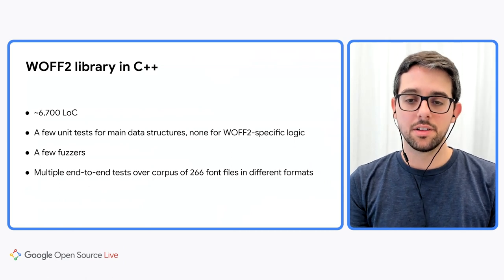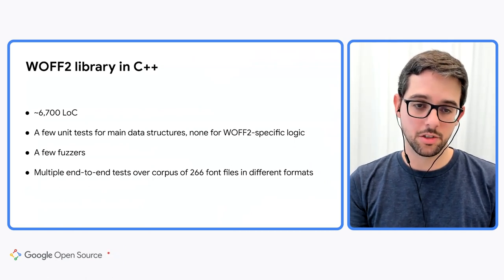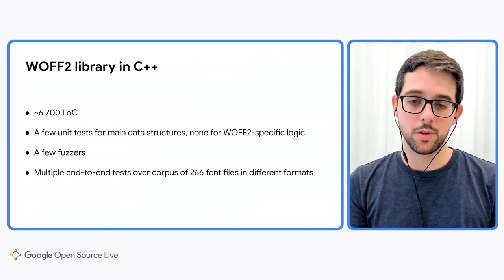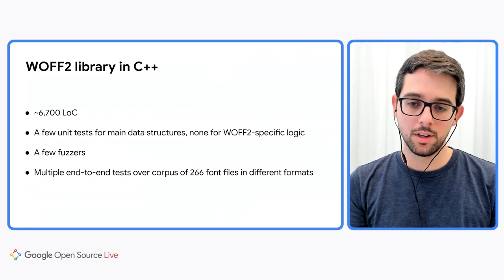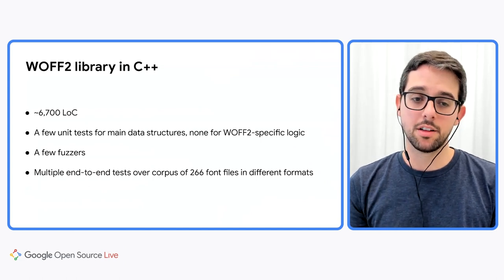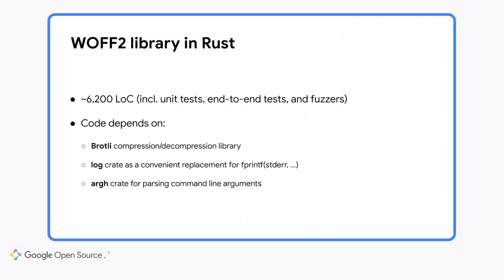The existing unit tests only cover the main data structures, which are shared between WOFF2 and WOFF1. Unfortunately, there were no unit tests for the WOFF2-specific logic. The end result of the port to Rust contains about 6,200 lines of code, including unit tests, end-to-end tests, and fuzzers.